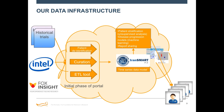The overall picture: on the left we have some seminal observational studies and historical trials on Parkinson's disease. One called DATATOP is one of a kind — it followed Parkinson's disease patients through three different types of therapies over the course of eight years. We're curating that data and making it available on TransMart. Also, ADNI Alzheimer's disease data, PPMI, and others that complement the database — giving clues to the natural history of Parkinson's disease. Many of these will be part of the datathon. Moving forward, we have the Intel wearables platform that will add ambulatory information on top of this rich clinical trial data.